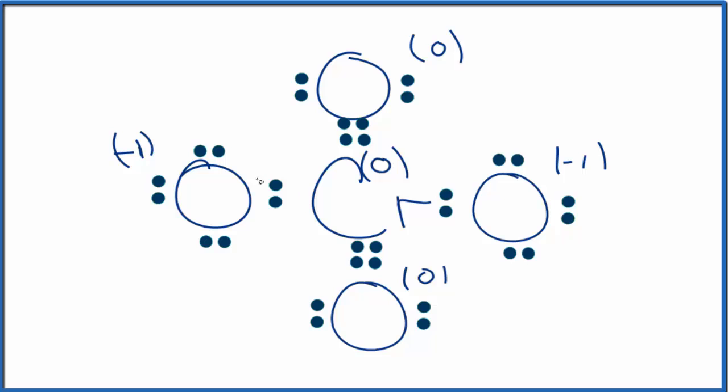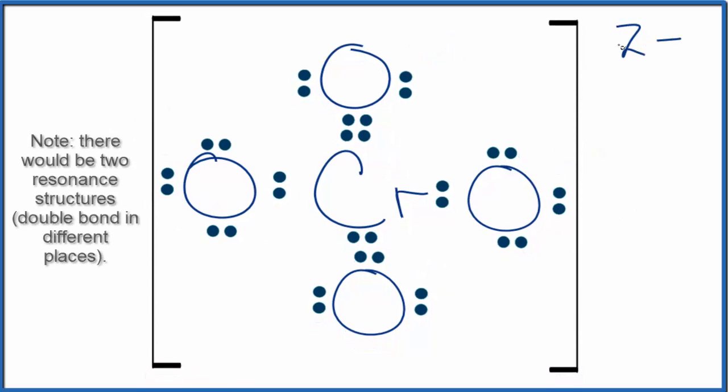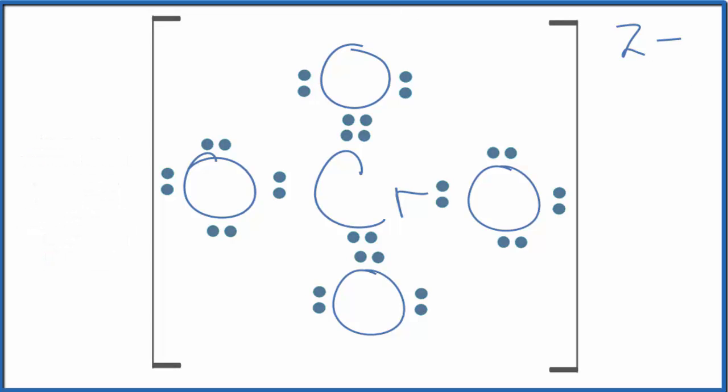Because we do have an ion, we need to put brackets around this and then write 2⁻ out here. So this is the most likely or most favorable Lewis structure for CrO4²⁻, the chromate ion. This is Dr. B, and thanks for watching.